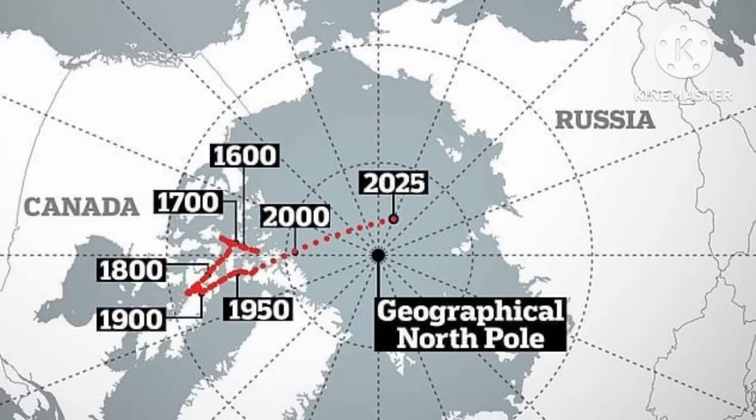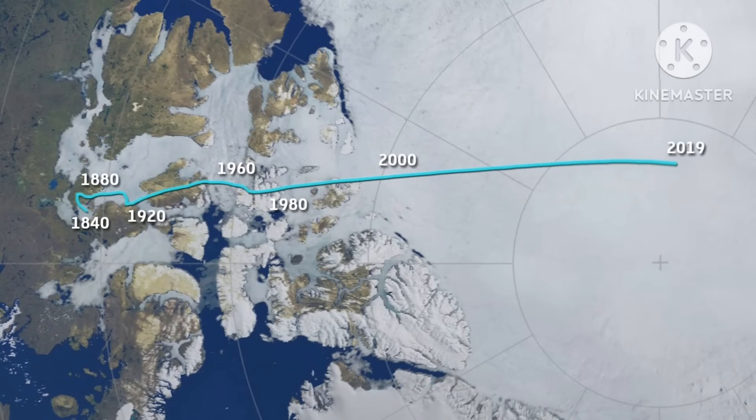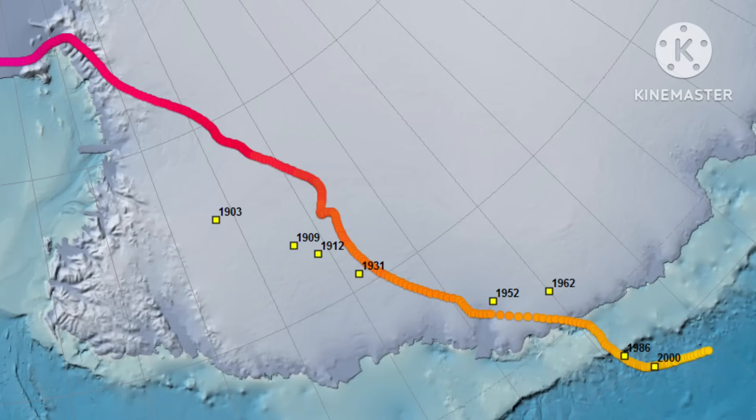But its travel seems to have accelerated. Between 1990 and 2005, the rate of movement increased from 15 kilometers per year to 50 to 60 kilometers per year. The same thing is happening with the Earth's magnetic south pole, which is drifting eastward over Antarctica.